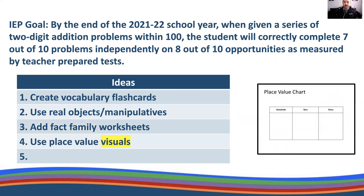A fourth idea is using place value visuals — some sort of visual reference point so students can interact with it, break down numbers, and deconstruct numbers in a place value chart. This is also beneficial for English language learners and other students in the class. Students can choose to use these visual supports if they find them useful.